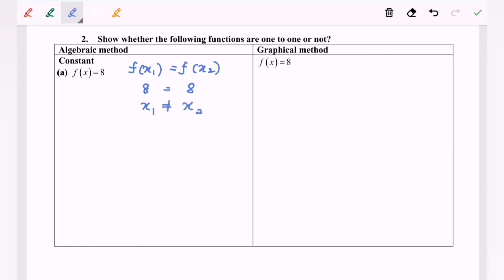So as a conclusion, the function f(x) equals eight is not a one-to-one function. So as a conclusion, f inverse does not exist for this situation.